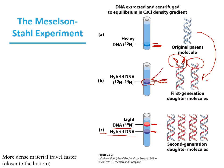As you allow the cells to divide more, you see one set composed only of N14 — because only N14 is in the media — and some cells retaining the hybrid containing both N14 and N15.